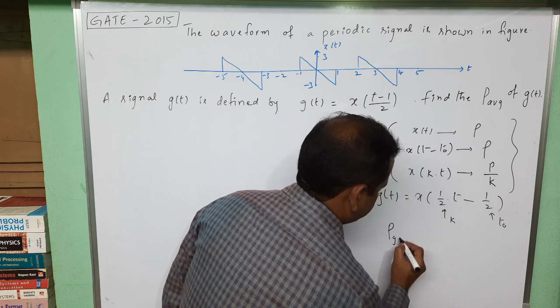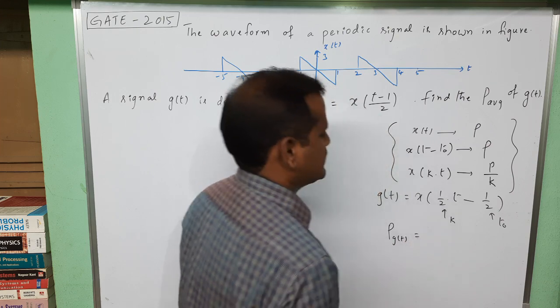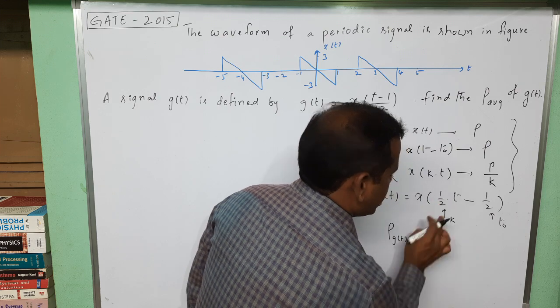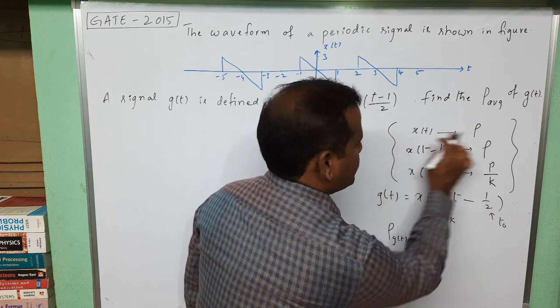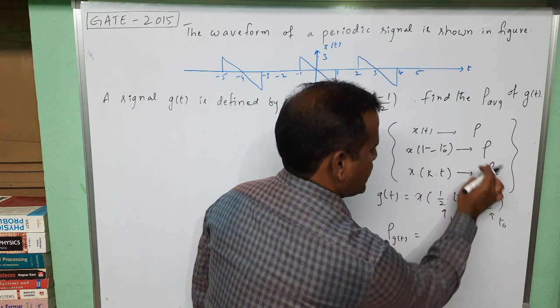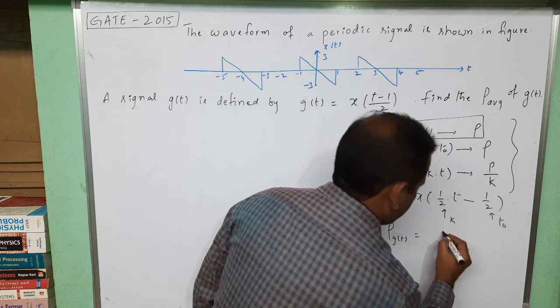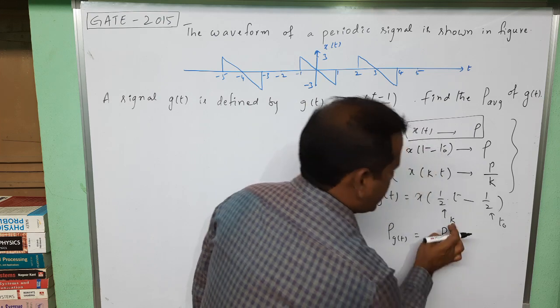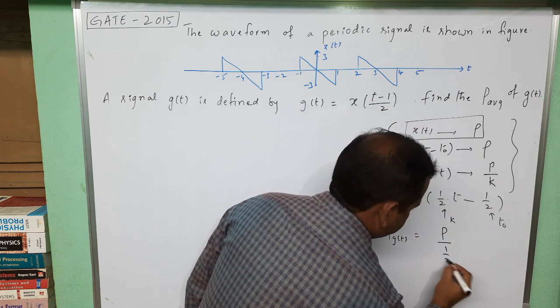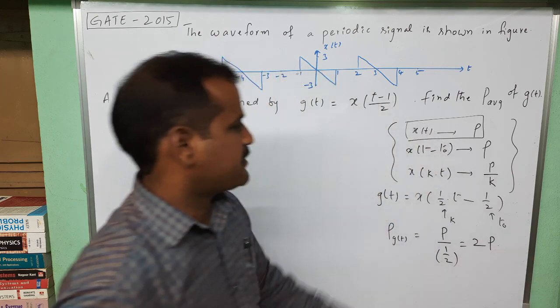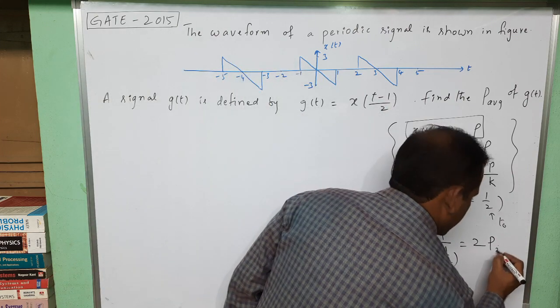If we write like this: x(kt) where k value is 1/2, and x(t) power is P, then x(kt) power is P/k. That means I am taking x(t) power as P, so P divided by k value 1/2 is nothing but 2 times the power of x(t).